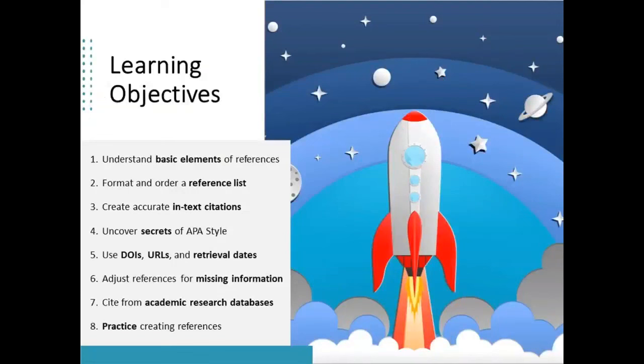Starting with item four, it gets really interesting. We're going to share some APA style secrets that we want everyone to know. Then we'll talk about DOIs and URLs, and how to decide when to include them in a reference, and when to include a retrieval date — spoiler alert, it's not very often. We'll also look at how to create a reference when the work is missing key information, how to create a reference to a work found in an academic database, and then we'll be practicing with some interactive slides.